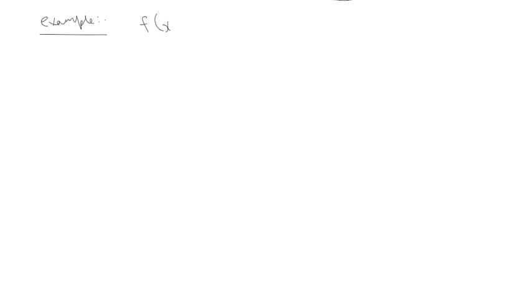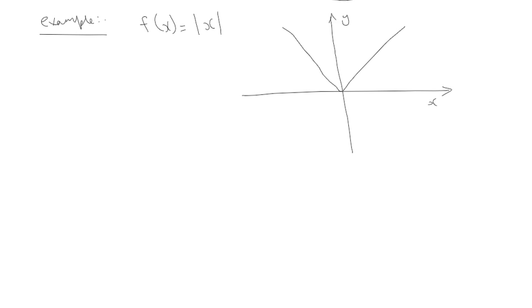We know what the absolute value function looks like. f(x) equals absolute value of x gives us the characteristic V-shaped graph. We're trying to determine continuity at x equals 0. If we divide this into a piecewise function: for x less than 0, f(x) equals minus x; for x equals 0, it's 0; and for x greater than 0, it's x. The minus x is used because since x is negative, multiplying by a negative sign gives us a positive value.